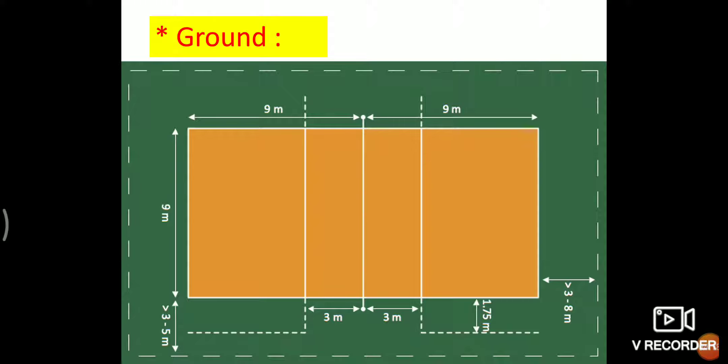20 centimeters away from the sideline, 15 centimeter wide lines drawn on both sides are called service zone. The player service is carried out from the service zone.